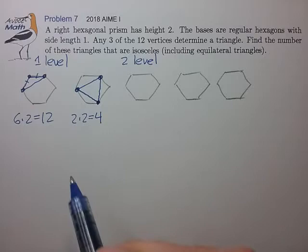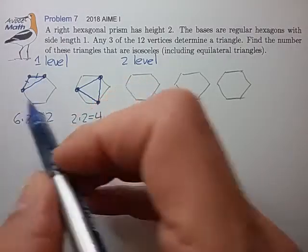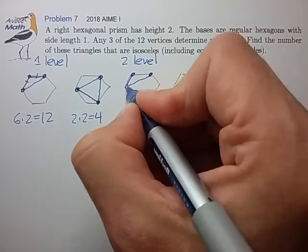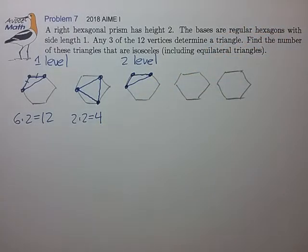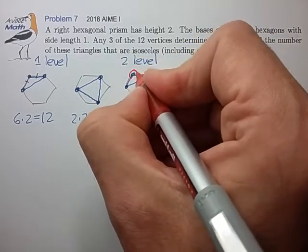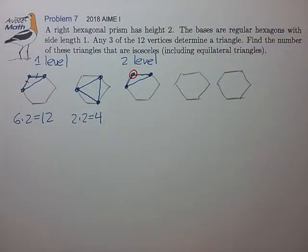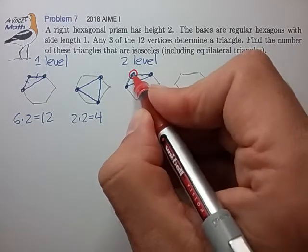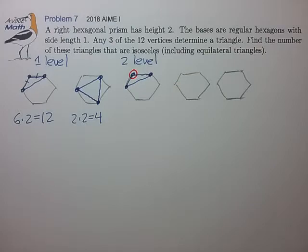And the simplest I can think of is again to choose three vertices sort of adjacent. But now we'll select this middle vertex to be on the opposite face. So imagine these two blue vertices being on the bottom face, and this third vertex being on the top face.